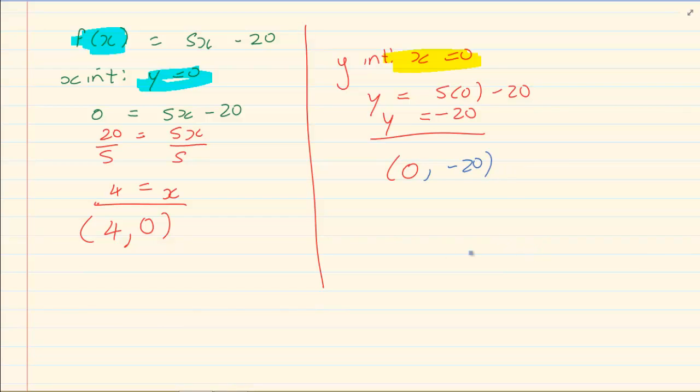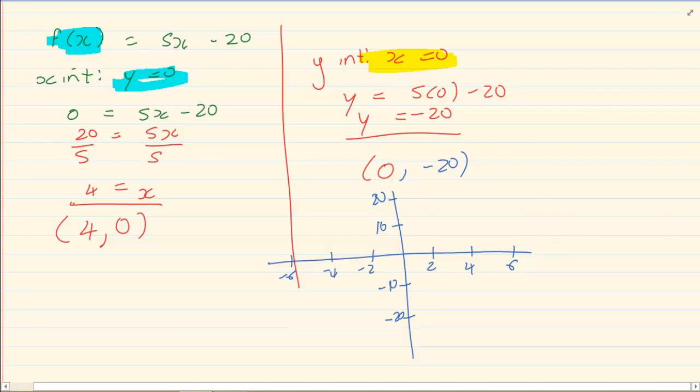So if you were drawing it on your Cartesian plane, you'd have, let's say I've got 2, 4, 6 and here minus 2, minus 4, minus 6. And then here I've got 10, 20, minus 10, minus 20. So what I'm showing you is my horizontal scale and my vertical scale does not have to be the same. My dots are on 0 and minus 20, and on 4 and 0. Then you take a ruler and you join the line.